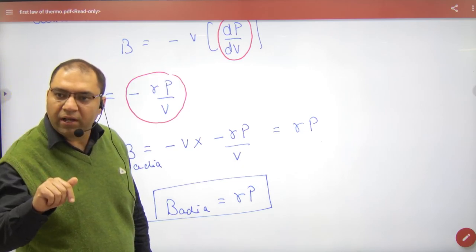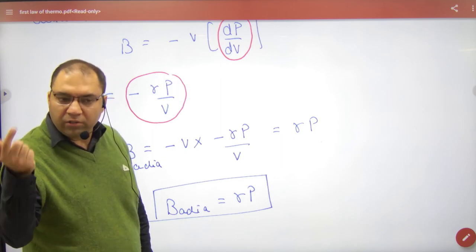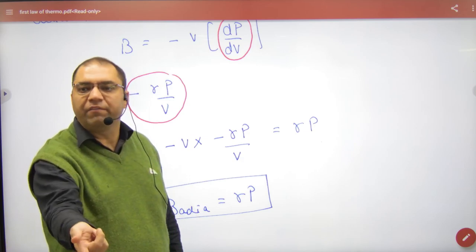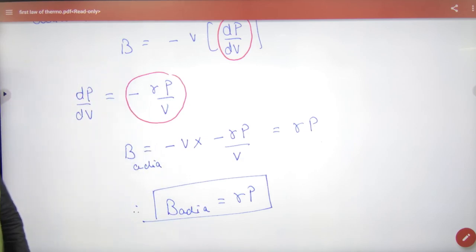P, and adiabatic is gamma times P. Isothermal slope is what? Minus P by V. Adiabatic is minus gamma P by V. Just multiply by gamma. Remember this, it will be useful in objective exams.